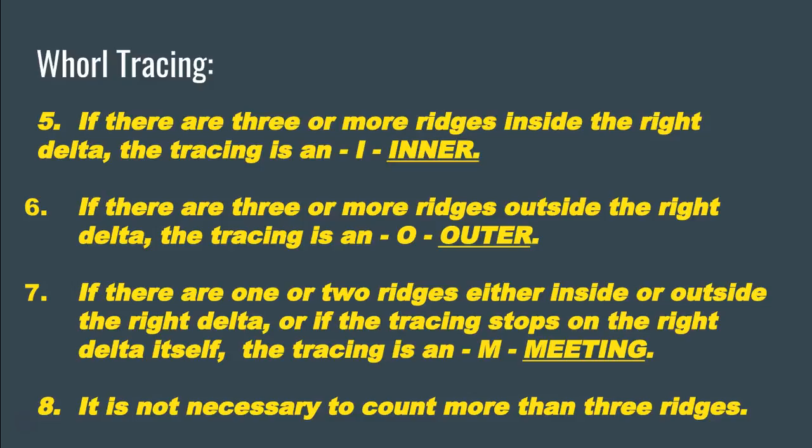Then we count the ridges between our stopping point and the right delta. If there are three or more ridges inside the right delta, the tracing is an inner tracing, designated with an I. If there are three or more ridges outside the right delta, it's an outer tracing, designated with an O. If there are one or two ridges either inside or outside, or if the tracing stops exactly on the right delta, it's a meeting tracing. It is not necessary to count more than three ridges.